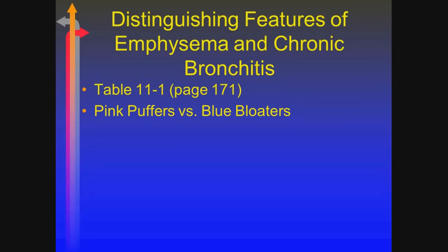The pink puffers are the true emphysematous patients — they're typically thinner in size, have a very rapid respiratory rate, they're puffing, and usually have a reddish or pinkish complexion. The blue bloaters — the true chronic bronchitis patients — picture Jabba the Hutt sitting there bloating and they're blue. They're not breathing rapidly, just kind of sitting there. They're typically the ones that have cor pulmonale, the blue bloaters, as opposed to the pink puffers. Take a look at the table on page 171; it gives a good breakdown between the two.